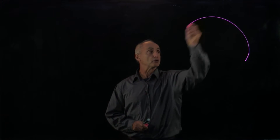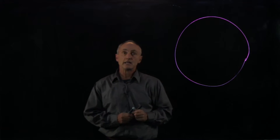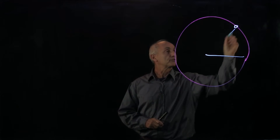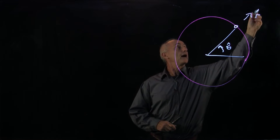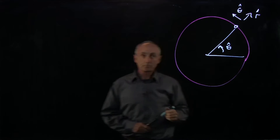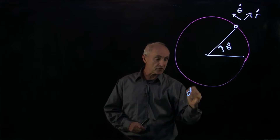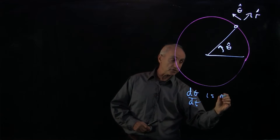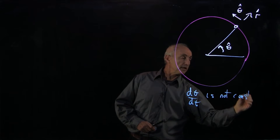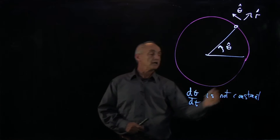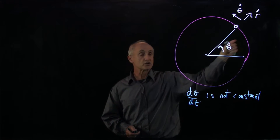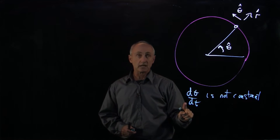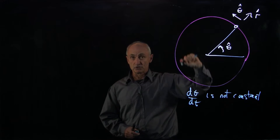Let's consider the case where an object is undergoing circular motion. We again introduce our polar coordinate system, r hat and theta hat. We now want to consider the case where d theta dt is not constant. That means that if d theta dt is positive, the object is speeding up in this direction, or if d theta dt is negative, the object is slowing down in this direction.